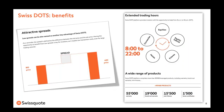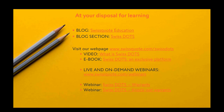What are the benefits? There are attractive spreads and extended trading hours — you can trade from 8 a.m. to 10 p.m. Central European Time. You can trade a wide range of products: more than 90,000 products in four categories — warrants, knockout warrants, mini future, and factor certificates. For learning, we have a blog called Swissquote Education with a section dedicated to SwissDOTS, including e-books and previous webinars explaining what is a warrant, a knockout warrant, and now a mini future.